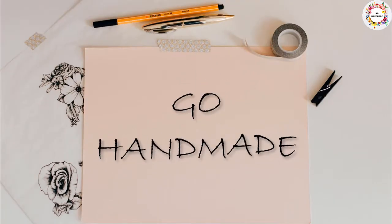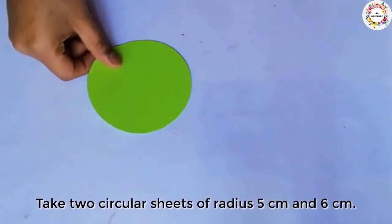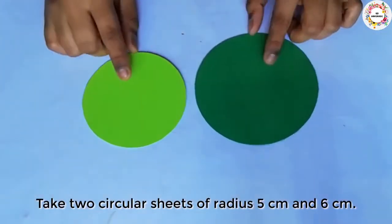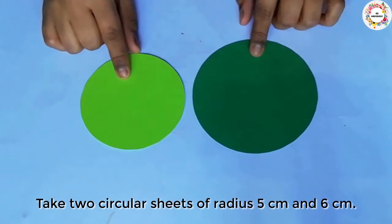So let's start. First of all, we have two circular sheets. One with a 5cm radius and a 6cm radius.